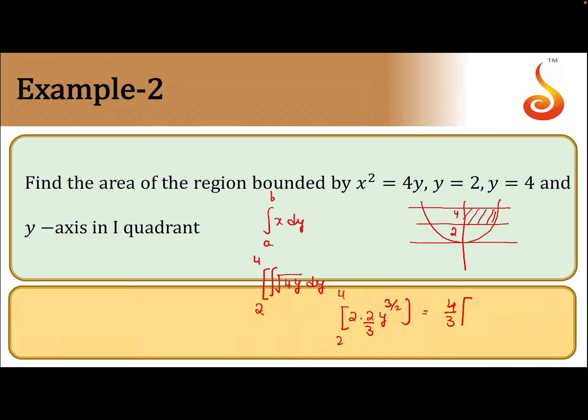4/3 times (8 - 2√2) square units. So this will give you (32 - 8√2)/3 square units, which is the required answer.